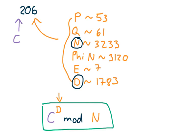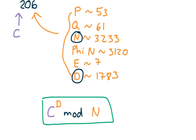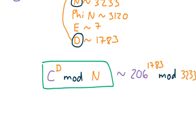So in our example, c is 206, d is 1,783, and n is 3,233. So this expression, 206 to the 1,783 power mod 3,233, simplifies to 89. And just like that, the key generator has decrypted the sender's encrypted message and got the original message of 89, or 'hi', that the sender was trying to send.